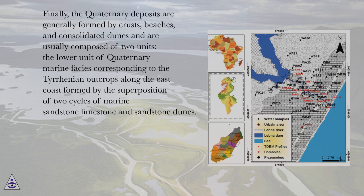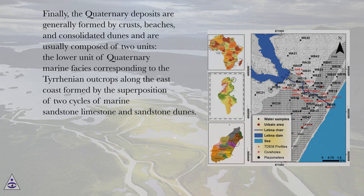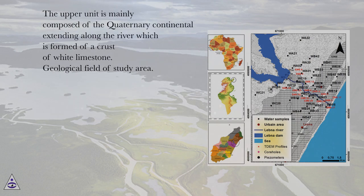Finally, the quaternary deposits are generally formed by crests, beaches, and consolidated dunes, and are usually composed of two units. The lower unit of quaternary marine facies corresponds to the Tyrrhenian outcrops along the east coast, formed by the superposition of two cycles of marine sandstone-limestone and sandstone dunes. The upper unit is mainly composed of quaternary continental deposits extending along the river, formed of a crust of white limestone.